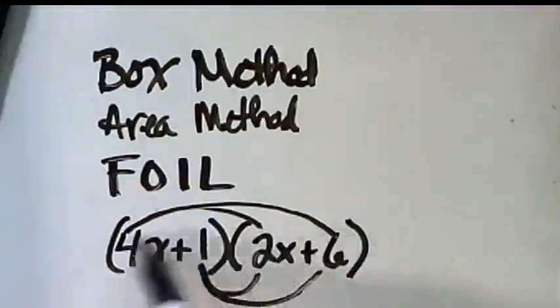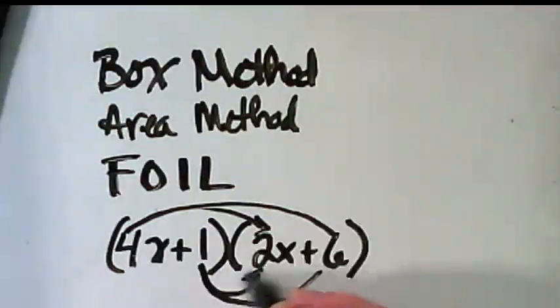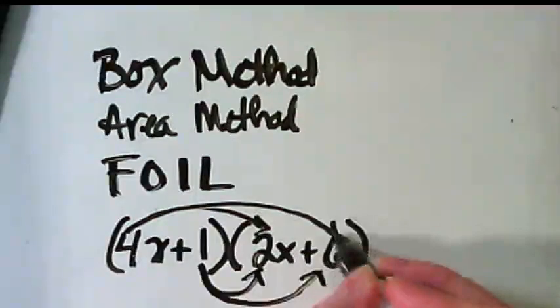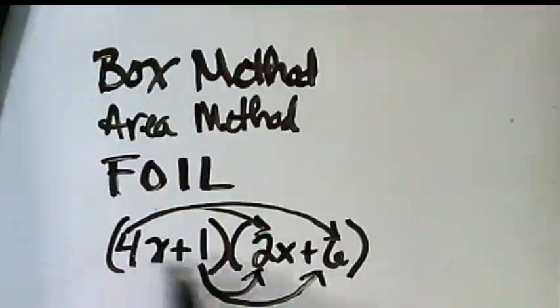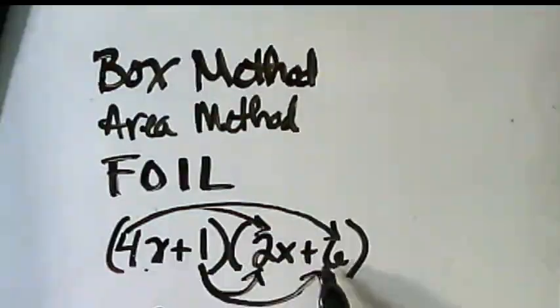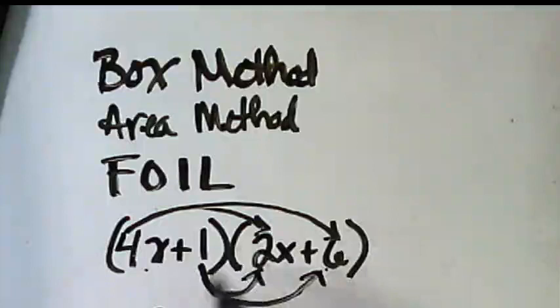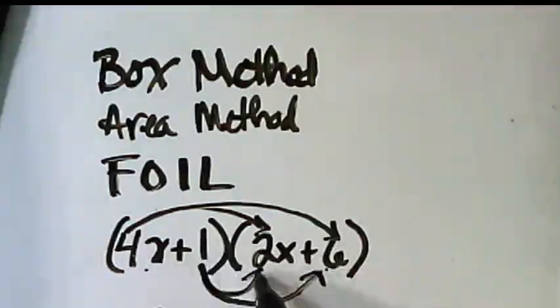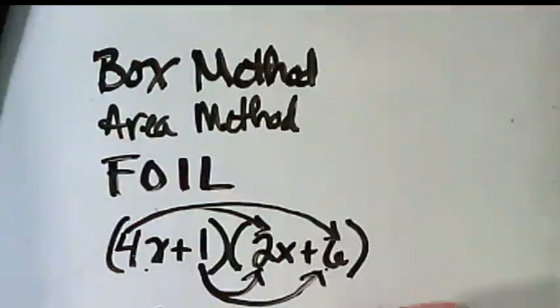And then we take those, basically what we've drawn here, and show that we're going to multiply those. So 4x times 2x becomes 8x squared. 4x times 6 becomes 24x. 1 times 2x becomes 2x. And 1 times 6 becomes 6.